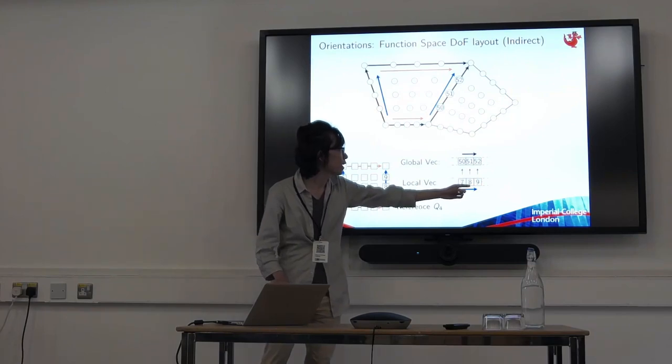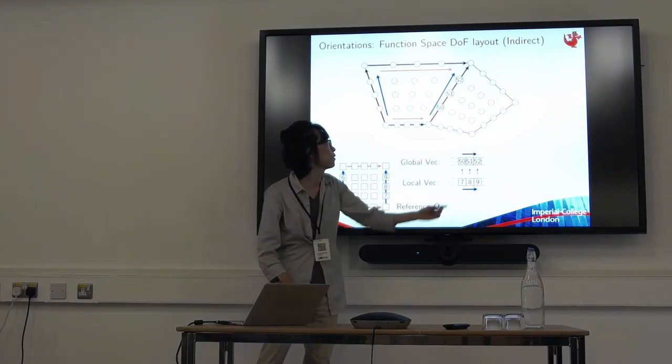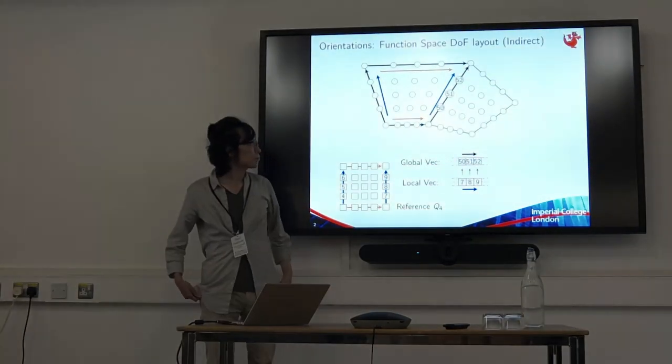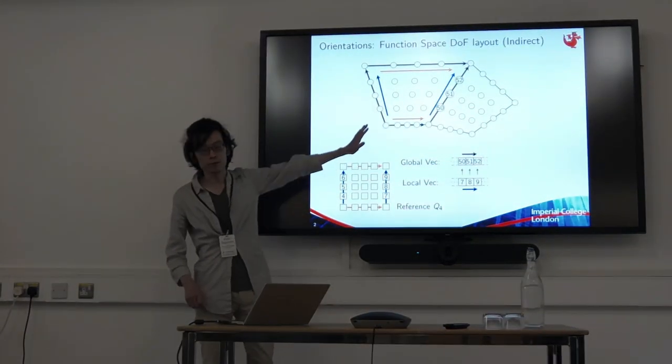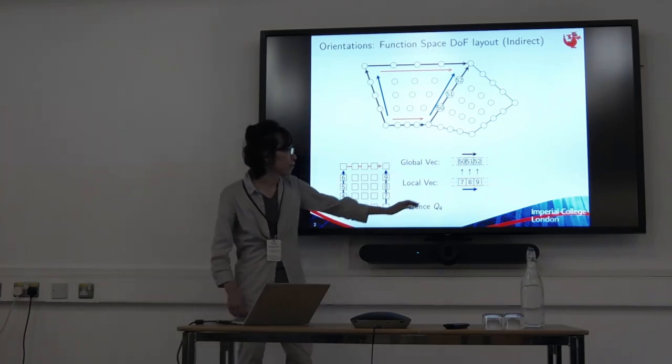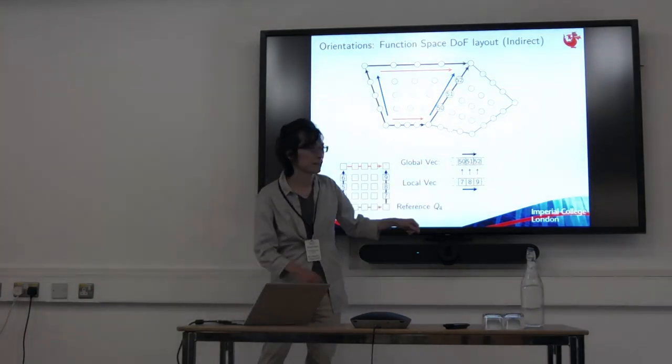With this approach we can make local to global mapping like this. So this LG map, 789 map to 50, 51, 52. The advantage of this approach is this construction of LG map is simple. We only have to remember 750 and just keep adding one.